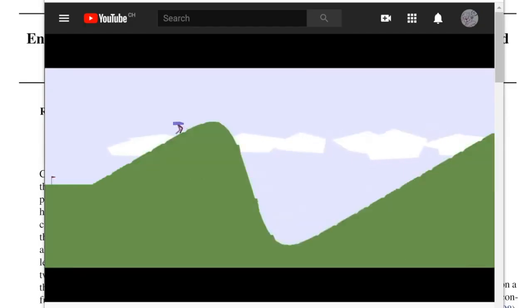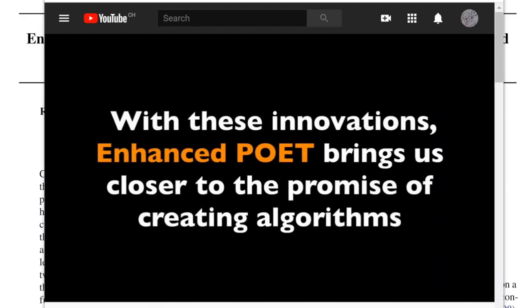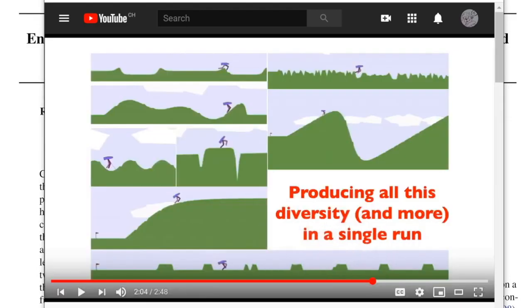Hi there. What you're seeing here are many different environments from a single run of a system called The Enhanced Poet. Last time we looked at a system called Poet, and The Enhanced Poet is an improvement over the original, fixing some of its shortcomings. You see here that the agent is able to solve this very diverse set of environments. And the notable thing is this is from a single run of this algorithm.